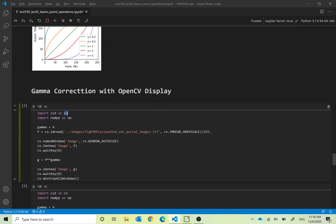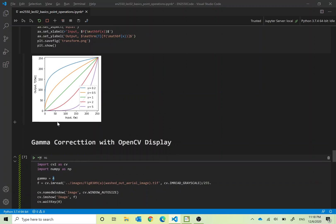We import OpenCV, cv2 as cv, import numpy. Gamma is equal to 4 in this case.